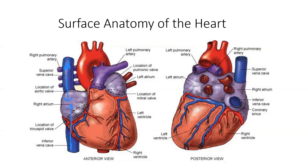Here we have the aorta. The blood comes from the left ventricle through the aorta, which gives oxygenated blood to the head, the neck, and then descends down to the rest of the body. On this side we have the left atrium, and here we have the left ventricle.